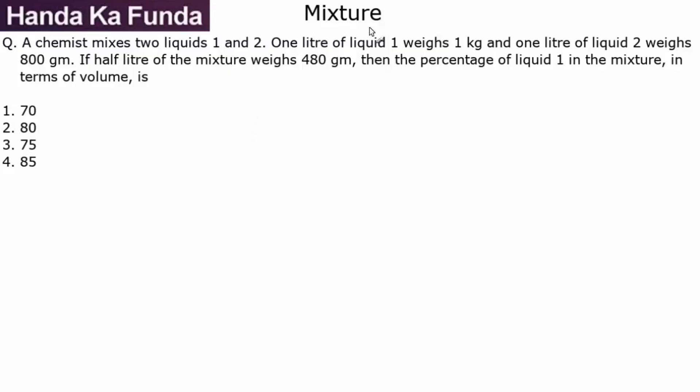Hi, I'm Ravi Honda. Welcome to another question on mixtures. A chemist mixes two liquids, 1 and 2. One liter of liquid 1 weighs 1 kg. One liter of liquid 2 weighs 800 grams. If half liter of the mixture weighs 480 grams, then the percentage of liquid 1 in the mixture is—a straightforward question on allegations.